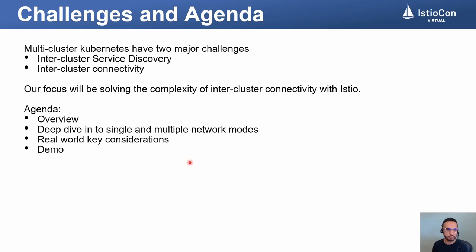If we look at the landscape of multi-cluster Kubernetes today, we can see two major challenges: discovering services across multiple clusters, and the fundamental network connectivity between workloads running on these multiple clusters. Our focus will be solving the complexity of inter-cluster networking connectivity using Istio. The agenda of the talk is an overview, a deep dive into single and multi-network modes of networking in Istio, some key real-world considerations, and a demo.